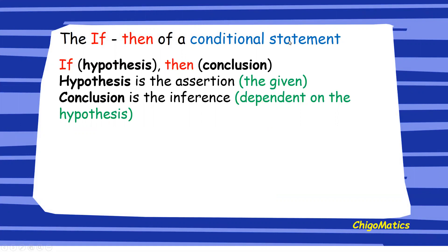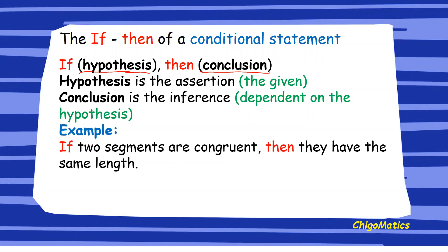In an if-then statement we write the hypothesis first, then we write the conclusion. The hypothesis is the assertion that is the given information. The conclusion is the inference and it depends on the hypothesis. For example: if two segments are congruent, then they have the same length. The hypothesis is the first part and the conclusion is the second part.